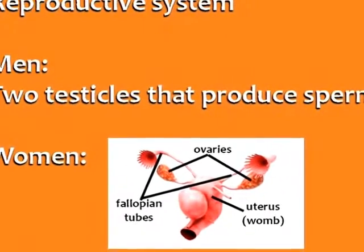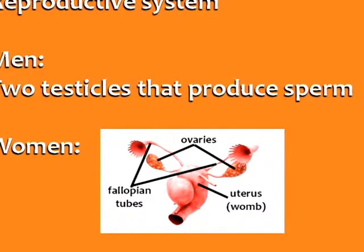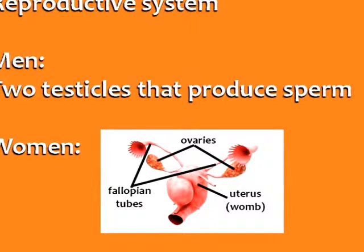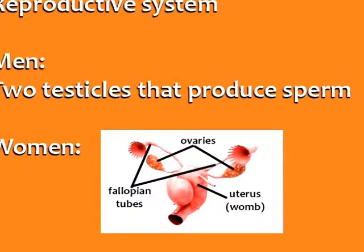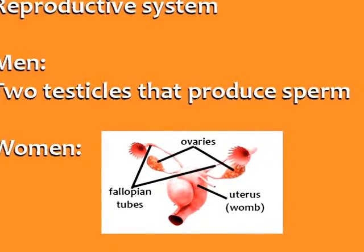Finally, we have the reproductive system. Men have two testicles, which produce sperm, the cells that carry the male's genetic material. Women have two ovaries, which produce eggs that travel through the fallopian tubes to the uterus, often called the womb. This is where the baby develops.